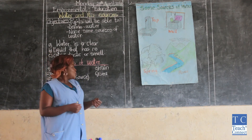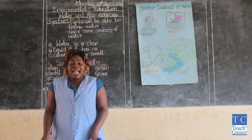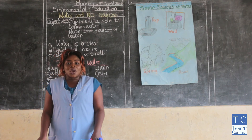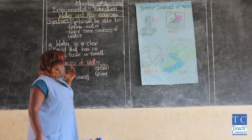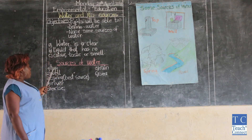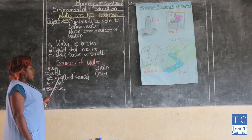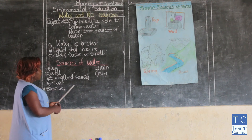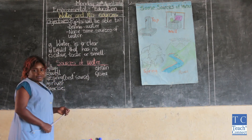Our next source is rain. Rain comes from the sky and can also be good for drinking when it is well collected. So those are some sources of water: tap, well, spring — which is the best source — river, rain, and sea.